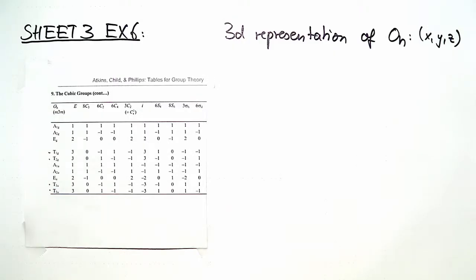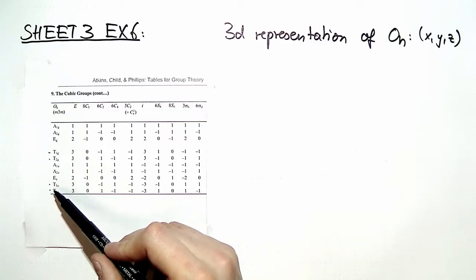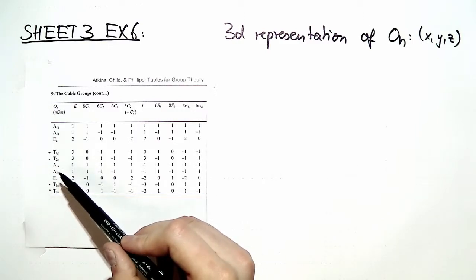Welcome back to exercise number six of problem set number three. This is the last exercise of problem sheet number three, and here we want to identify the three-dimensional representation of OH introduced in the very beginning of our lecture. We want to identify this three-dimensional representation as one of the irreducible representations given by the character table of OH.